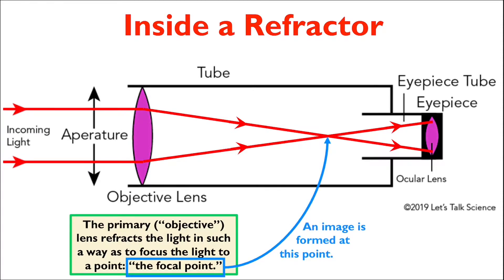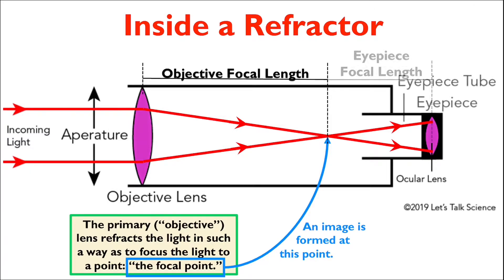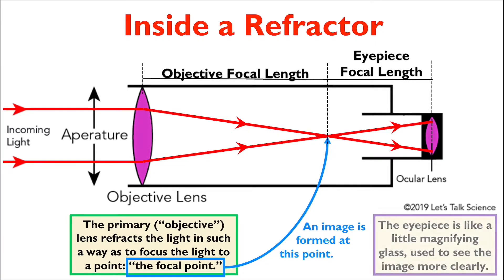The distance between the primary lens and the focal point of a telescope is called the objective focal length, and the distance from the focal point to the ocular lens is called the eyepiece focal length. The eyepiece is like a little magnifying glass — the shorter the focal length of the eyepiece, the higher its magnification will be.